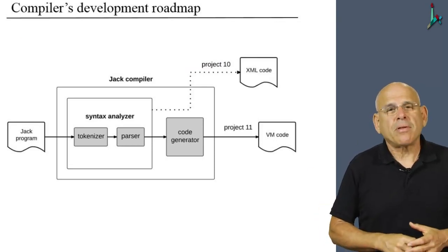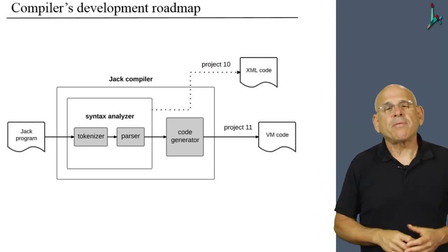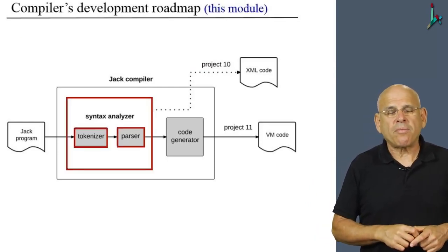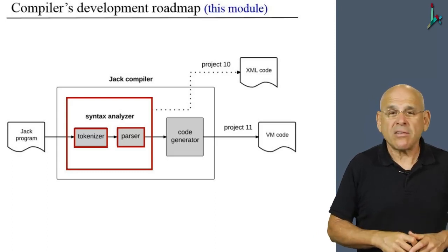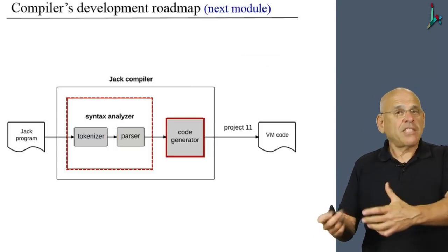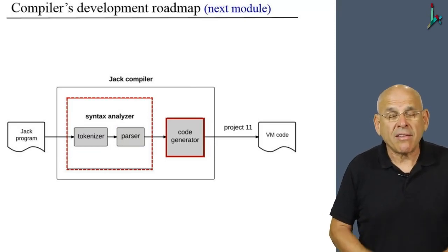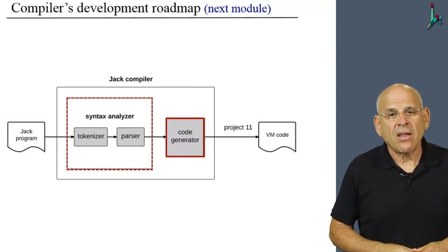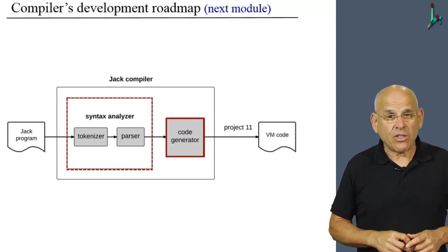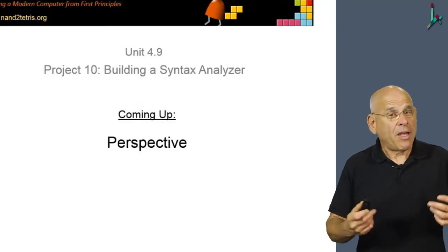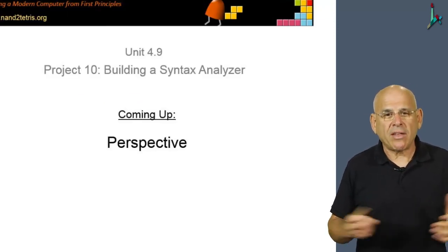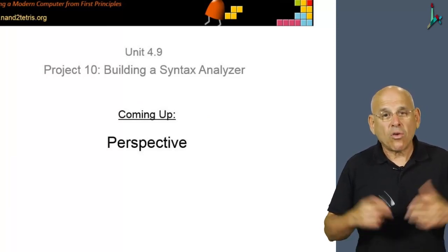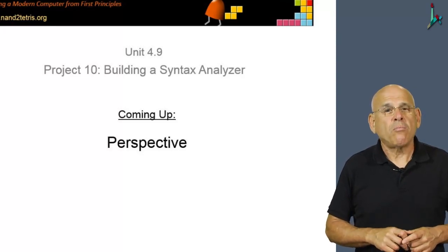So to recap, here is our roadmap. We're developing a Jack compiler. In this module, we developed the syntax analyzer of the compiler. In the next module, we are going to develop a code generator that, taken together, will deliver the full functionality of a compiler for the Jack language. So this has been the unit in which we discussed how to handle project 10. And what comes up is the concluding perspective unit of module 4.